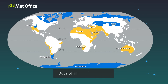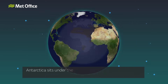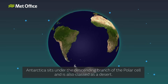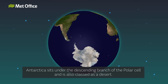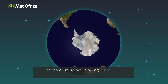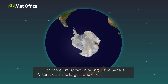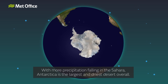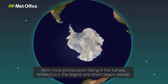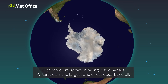But not all deserts are hot. Antarctica sits under the descending branch of the polar cell and is also classed as a desert, with more precipitation falling in the Sahara. Antarctica is the largest and driest desert overall.